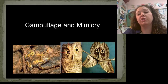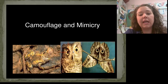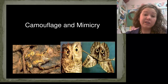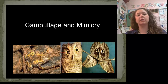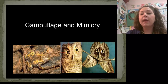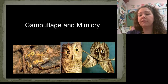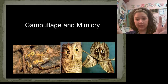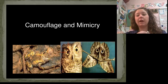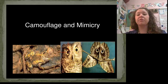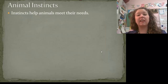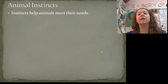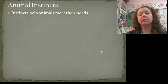Two more adaptations to write down: camouflage and mimicry. On the left is a frog that's hard to see because he's camouflaged and blending in with his surroundings. On the right is actually a butterfly — not an owl — and this butterfly has eye spots, mimicking the look of an owl. Those eye spots make predators think it's an owl, so they won't hunt it. Write down camouflage and mimicry.